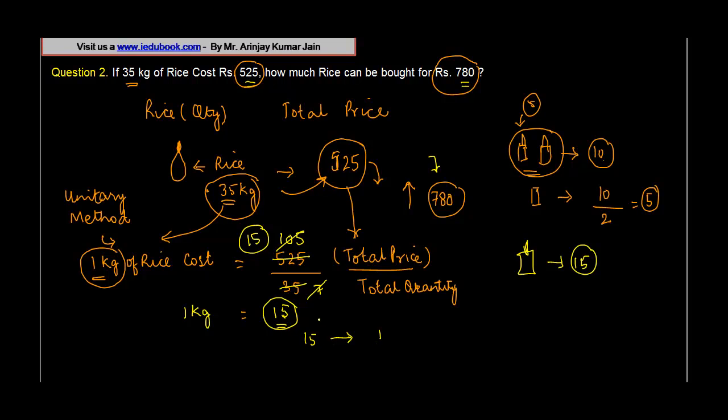can be used to buy 780 divided by price per kg. 15 into 5 is 75, so we get 3 carried here, 30, 32 - 52 kgs of rice. So by using 780 we can buy 52 kgs of rice.